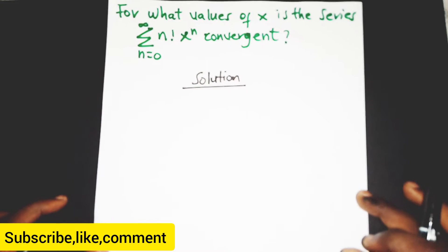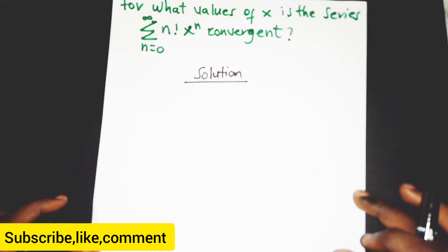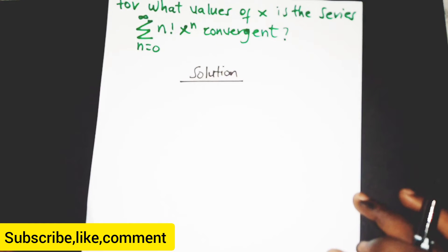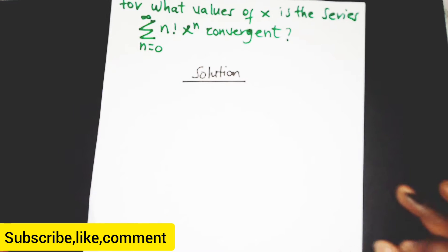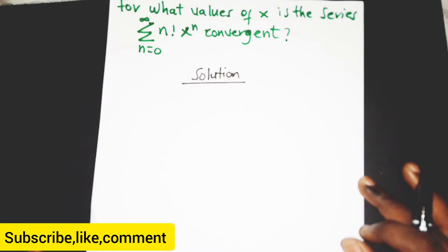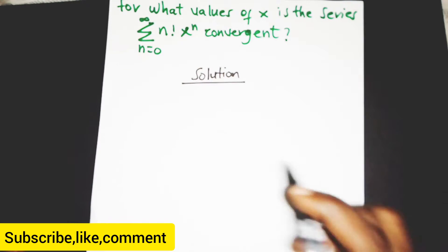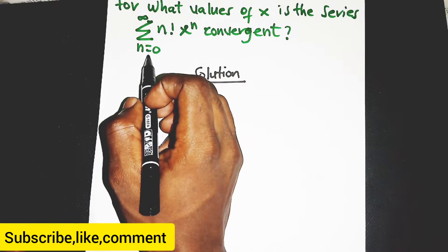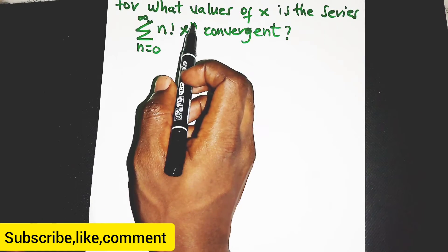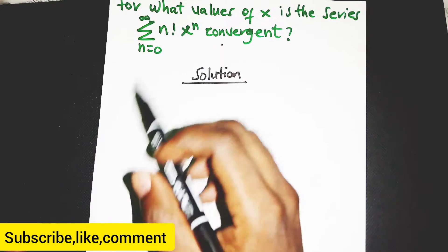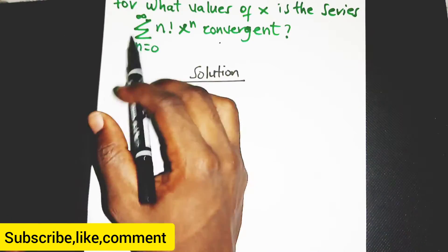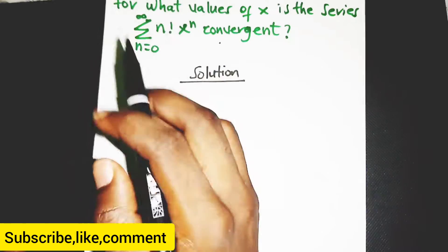Hello students, welcome once again. This time we are solving a problem on convergence of a series, specifically looking at power series. The question is: for what values of s is the series — the summation from n equal to 1 to infinity of n factorial times s to the power n — convergent?